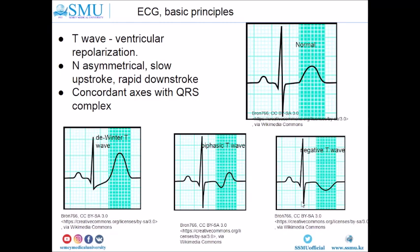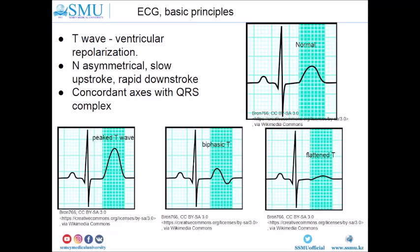A negative T-wave occurs when the QRS complex is predominantly positive but the T-wave is negative. Hyperacute peaked T-waves are symmetrical and tall — normally T-waves are asymmetrical — and can be an early sign of myocardial infarction. A biphasic T-wave can also appear with the first half positive and second half negative. The last pattern is a flattened T-wave with decreased amplitude.